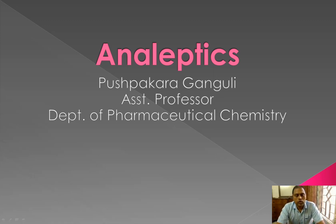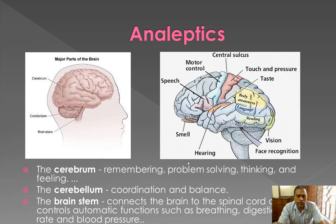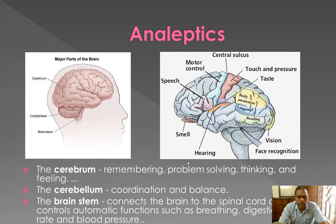Hello students, we are into a new chapter. The name of the chapter is analeptics. Analeptics are drugs which are CNS stimulants. Before going into the actual topic, let me explain about the brain and its parts, because analeptics are CNS stimulants — that is, central nervous system stimulants. The central nervous system contains mainly the brain and spinal cord.